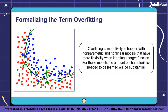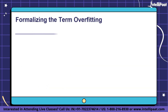Overfitting is more likely to happen with non-parametric and non-linear models that have more flexibility when learning a target function. For these models, the amount of characteristics to learn is quite substantial. That is why many non-parametric machine learning algorithms include parameters or techniques to limit and constrain how much detail the model learns.